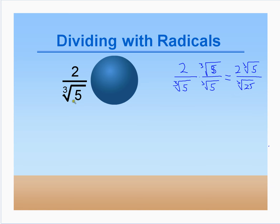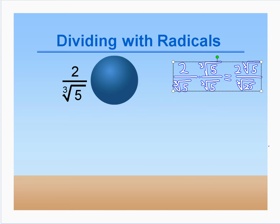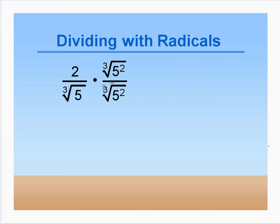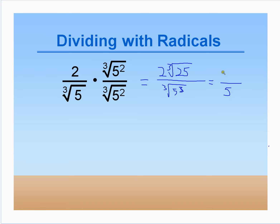To get rid of a cube root, we need a perfect cube under the radical. So we multiply by the cubed root of 5 squared over the cubed root of 5 squared. In the numerator we get 2 times the cubed root of 25. In the denominator, we have the cubed root of 5 to the first times 5 squared, which is the cubed root of 5 cubed — and the cubed root of 5 cubed is simply 5. So the answer is 2 times the cubed root of 25 over 5.